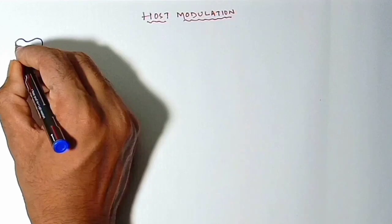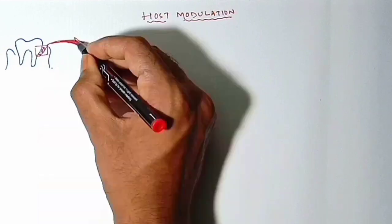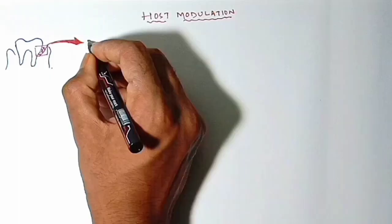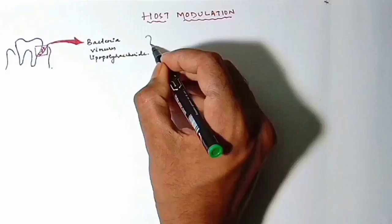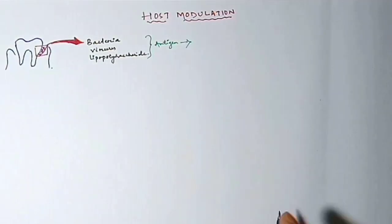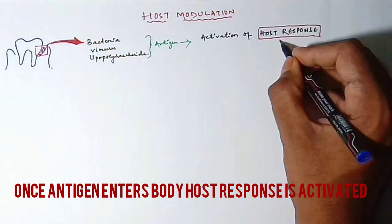Host interaction is biofilm and host response. As we can see here, there is a plaque and biofilm in which bacteria, viruses, lipopolysaccharides which we call as antigens. Once the antigens enter the body, they will activate the host response by activating the neutrophils.